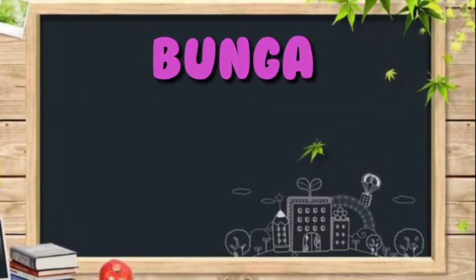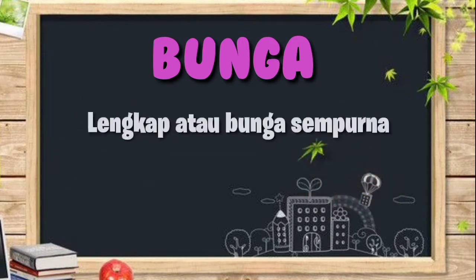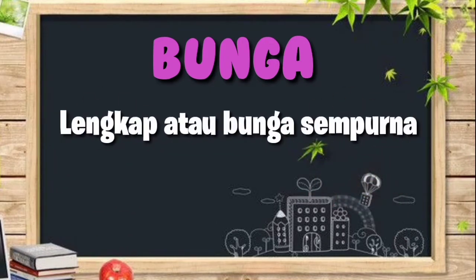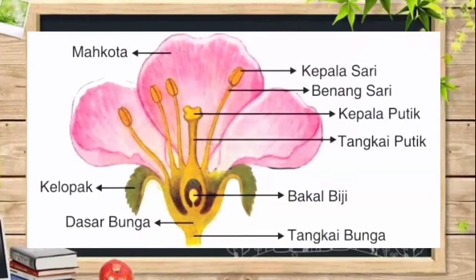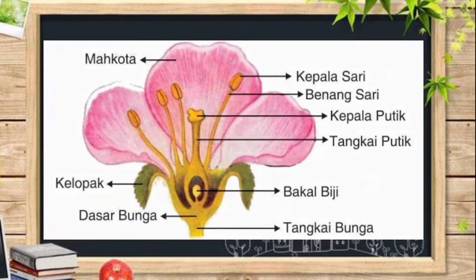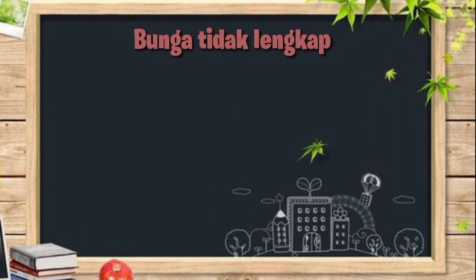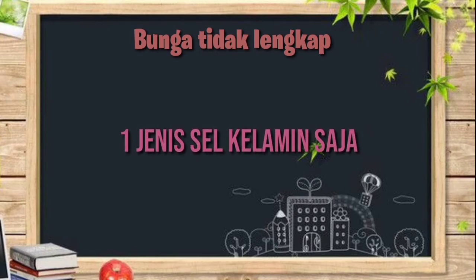Ngomong-ngomong soal bunga, bunga itu terbagi menjadi dua macam: ada bunga lengkap dan ada juga bunga yang tidak lengkap. Bunga lengkap atau bunga sempurna adalah bunga yang memiliki semua bagian bunga seperti putik, benang sari, mahkota, kelopak bunga, bakal biji, bakal buah, dasar bunga, dan tangkai bunga. Sedangkan bunga yang tidak lengkap adalah bunga yang hanya memiliki satu jenis sel kelamin saja.